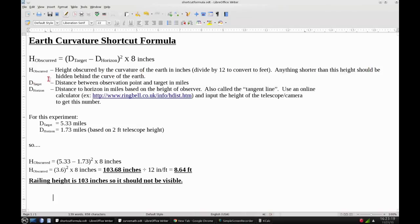Distance to target is just the distance between the observer and whatever he's looking at. Distance to horizon is in miles and is based on the height of the observer or your telescope/camera height. You might also hear this called the tangent line, and this has to do with the geometry used to calculate it.